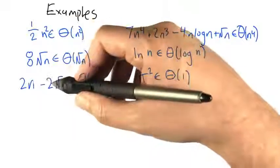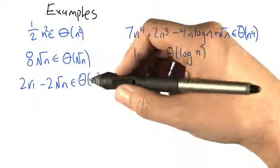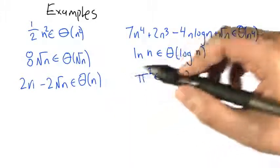Our equation from before, 2n minus 2 times the square root of n, just becomes big theta of n. It's just a linear function, asymptotically.